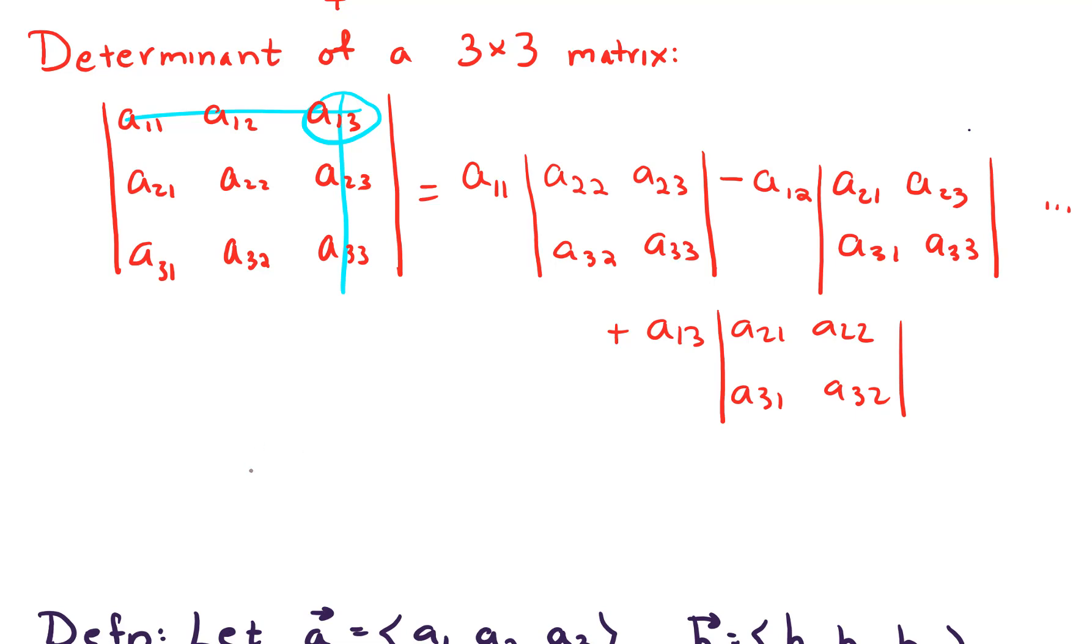So the determinant of this 3 by 3 matrix looks like A11 times, computing our determinant here, we have A22, A33, minus A32, A23.